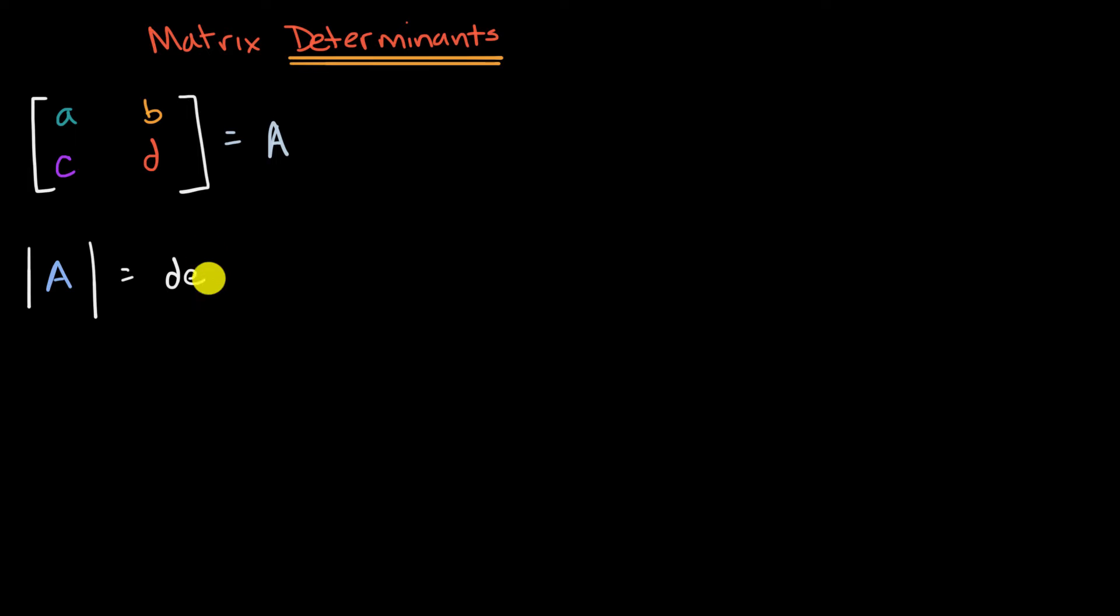You could write it this way. The determinant of matrix A, you could write it that way, or you could write it this way, where you put these lines that look like big absolute value signs instead of the brackets when you describe the numbers. And I haven't explained what a determinant is or even how to compute it yet. I'm just talking about the notation of how you even talk about the determinant of a matrix. So you could also write it this way, just rewrite the whole matrix with those vertical bars next to it.